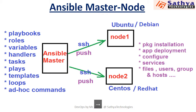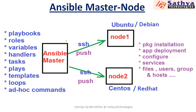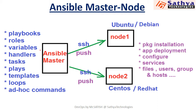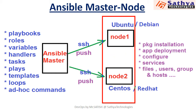Now the question is how Ansible will work. In Ansible we have a component called Ansible Master, and we can control multiple nodes with this Ansible Master. If you go with other configuration management tools like Puppet, it contains the Puppet Master and Agents. But Ansible is agentless — without any agent we can manage multiple nodes.